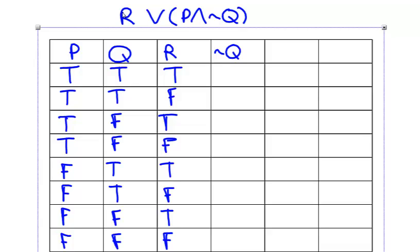To do that, I look at my column Q. Wherever I have true, I'm going to write false. Wherever I have false in Q, I'll write true in the negation of Q, just like this.